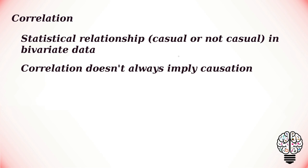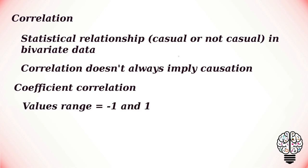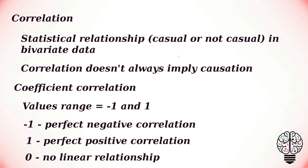So we can understand that correlation doesn't always imply causation. The correlation coefficient is a statistical measure of the strength of the relationship between the relative movements of two variables. The values range between minus one and one. A correlation of minus one shows a perfect negative correlation, while a correlation of one shows a perfect positive correlation. A correlation of zero shows that there is no linear relationship between movement of the two variables.